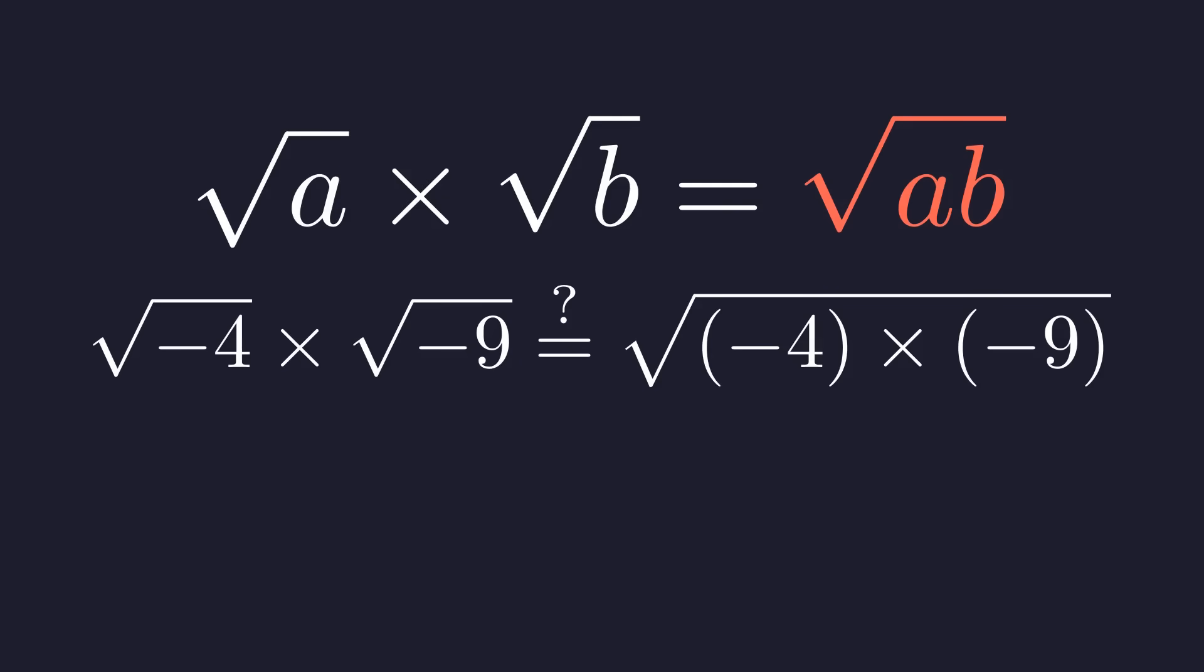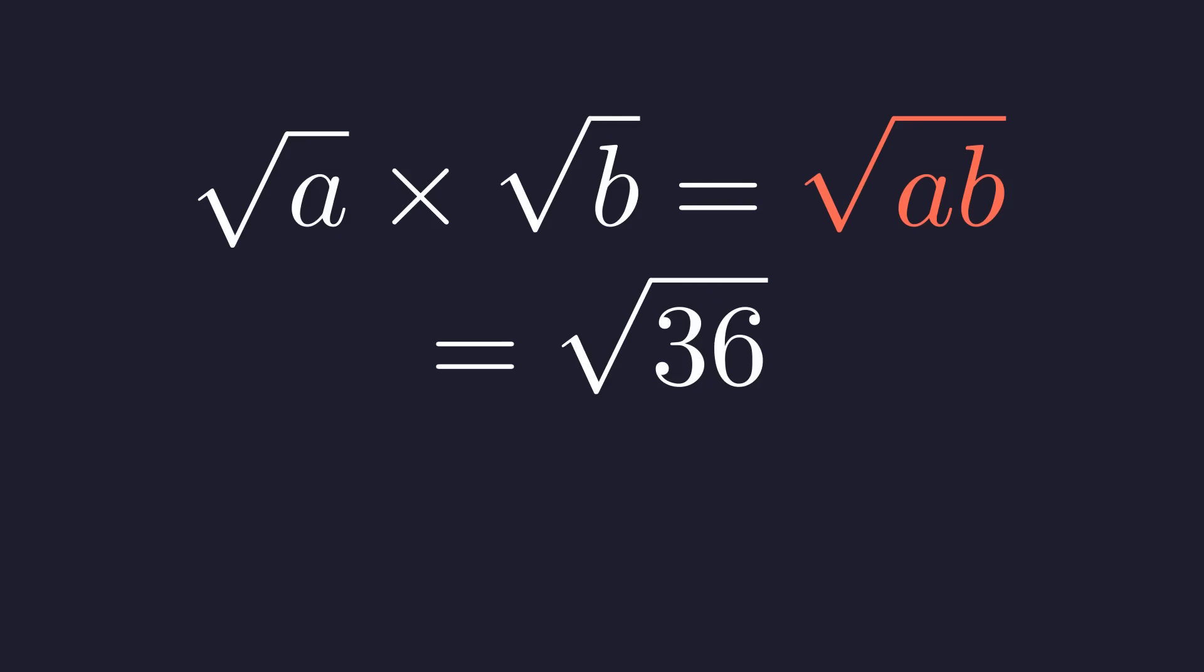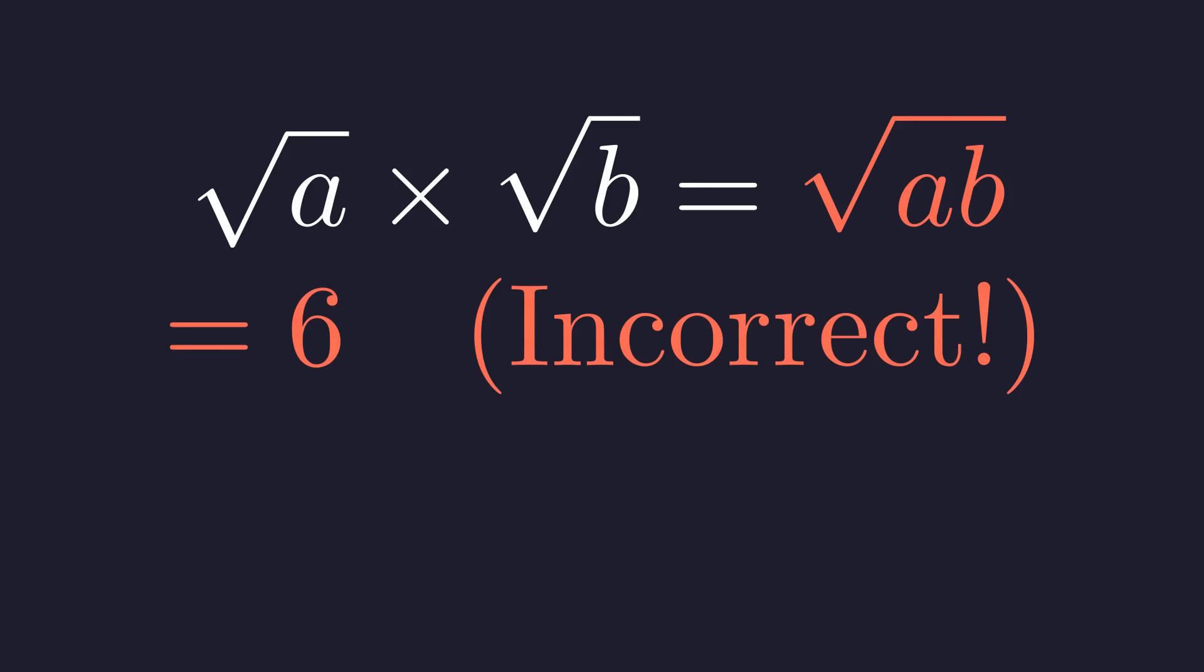This would mean multiplying negative 4 and negative 9 inside the square root. Negative 4 times negative 9 is positive 36. And the square root of 36 is 6. This seems logical, but it is completely wrong. We have broken a fundamental rule of mathematics.